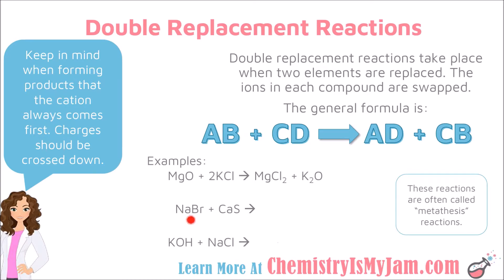In my second example, AB is sodium bromide and CD is calcium sulfide. A and D are going to come together, so sodium and sulfide are going to come together to form a compound. You would once again cross down the charges. Sodium has a charge of plus 1 and sulfur has a charge of minus 2. Cross those down to get Na2S. Finally, C and B are going to come together, so calcium and bromine are going to come together to form calcium bromide. Calcium has a charge of plus 2 and bromine has a charge of minus 1. Cross those down to get CaBr2. The last thing you should do is confirm that the reaction is balanced. In this case, a coefficient of 2 is needed here in order to balance the sodiums and bromides.